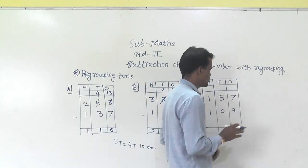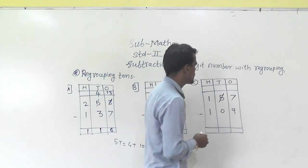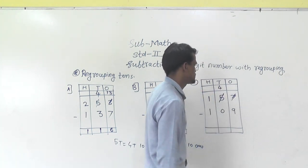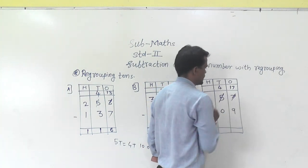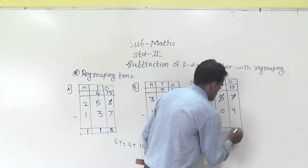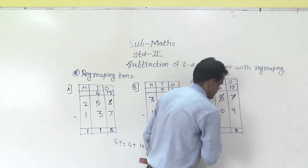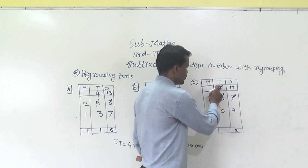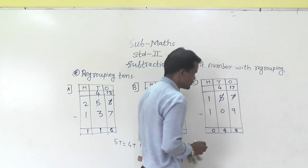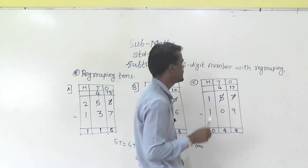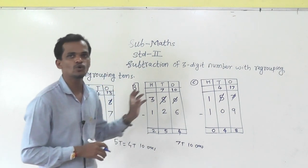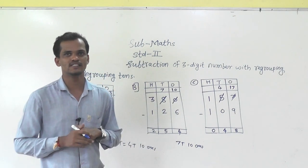Next: 7 minus 9 is not possible. So regroup this 5 tens into 4 tens, and add 10 ones into the 7 ones to get 17. Now 17 minus 9 is 8. Then 4 minus 0 is 4, and 1 minus 1 is 0. So 48 is the answer. Like this you have to solve — here we regroup the tens place digit.